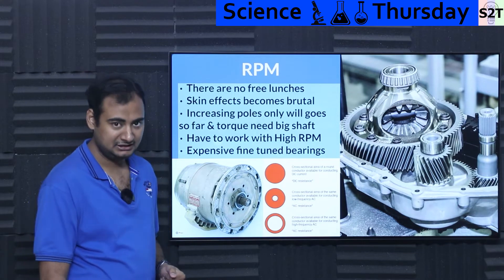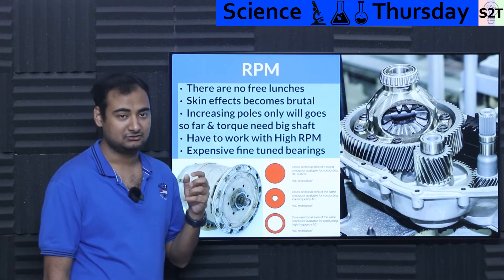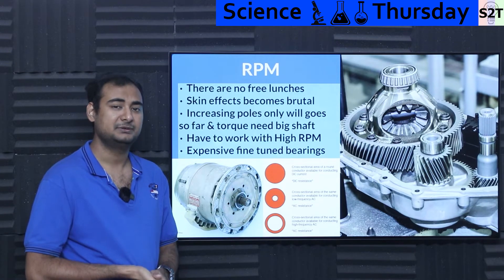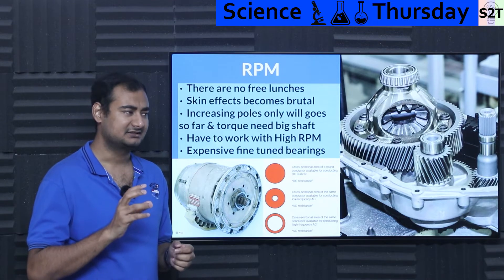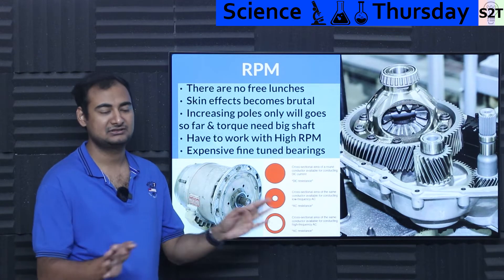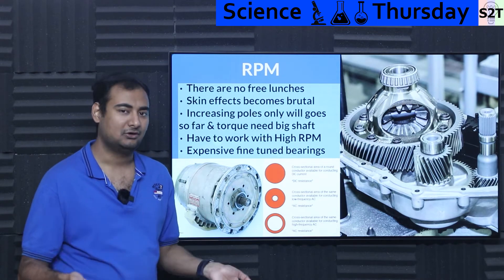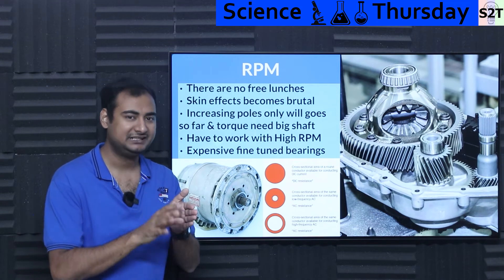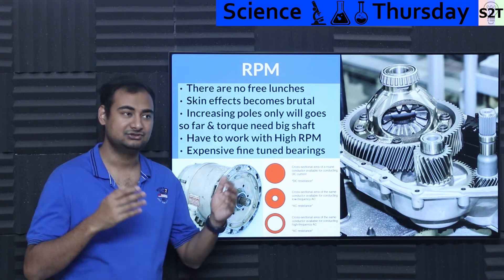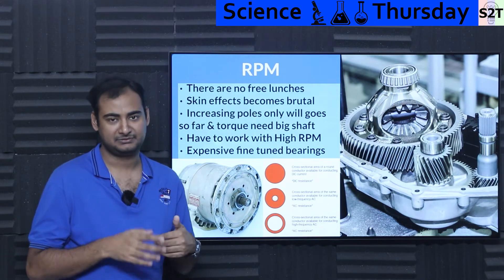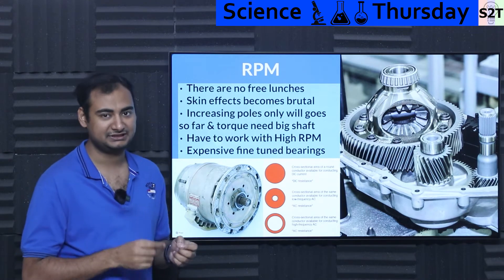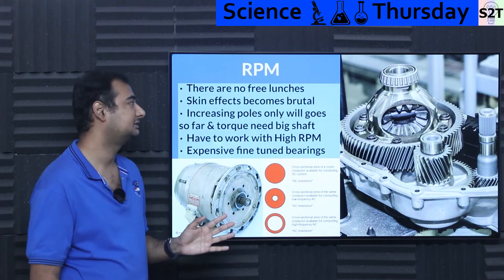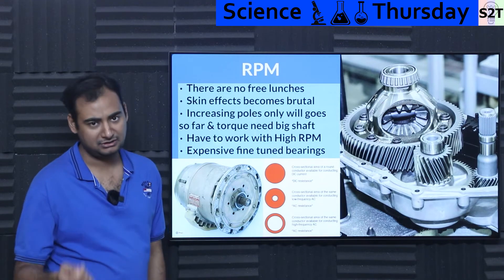The final nail in the coffin is expensive, fine-tuned bearings. For context, Tesla model motors have RPMs so high that the company supplying bearings — SK Hynix, I believe — says the bearing is not designed for these RPMs. But almost no other options exist. One solution is continuous oil cooling, which allows them to run — that's how all jet engines survive too. Jet engine RPMs are already stupid high, so they also need continuous oil injection to stay cool, otherwise they simply self-destruct. That's the penalty you deal with in high-frequency systems.